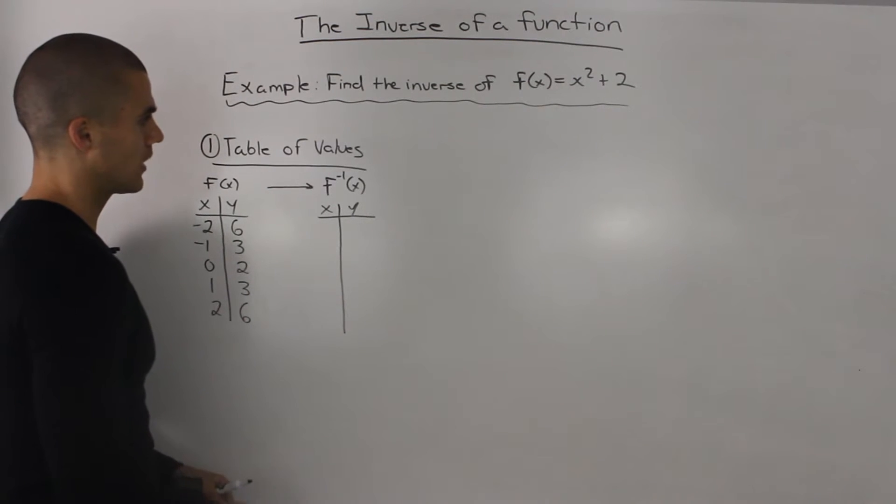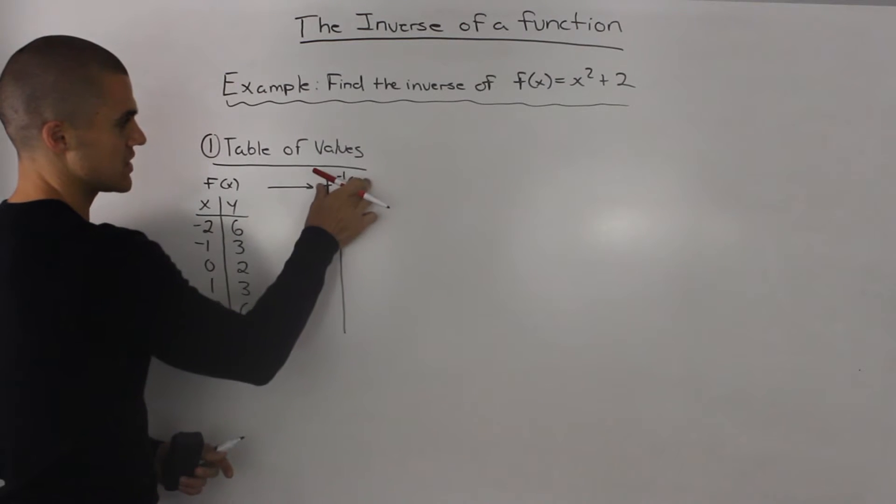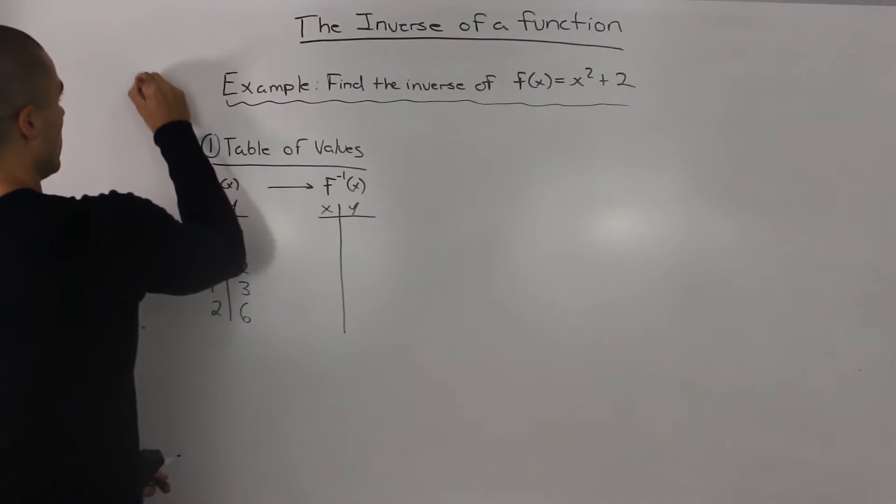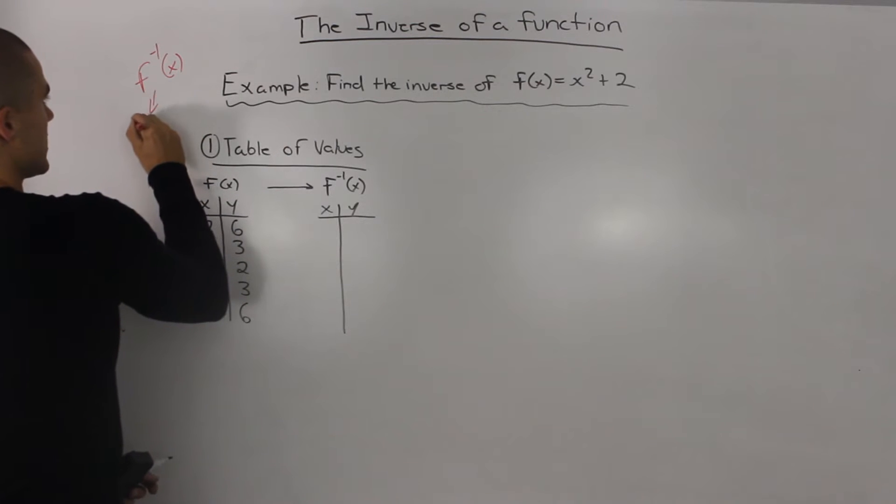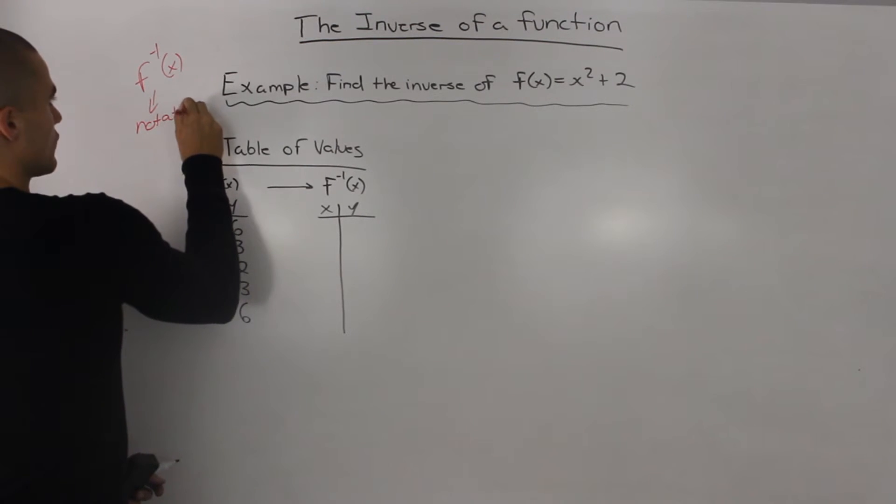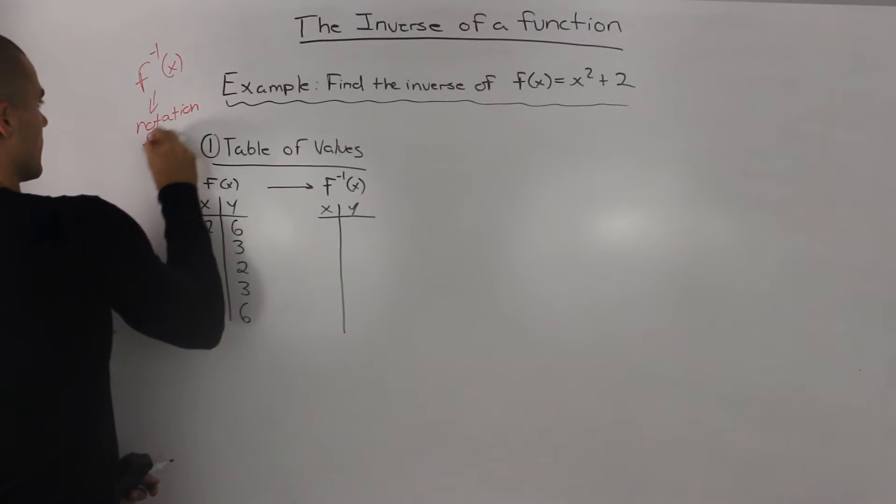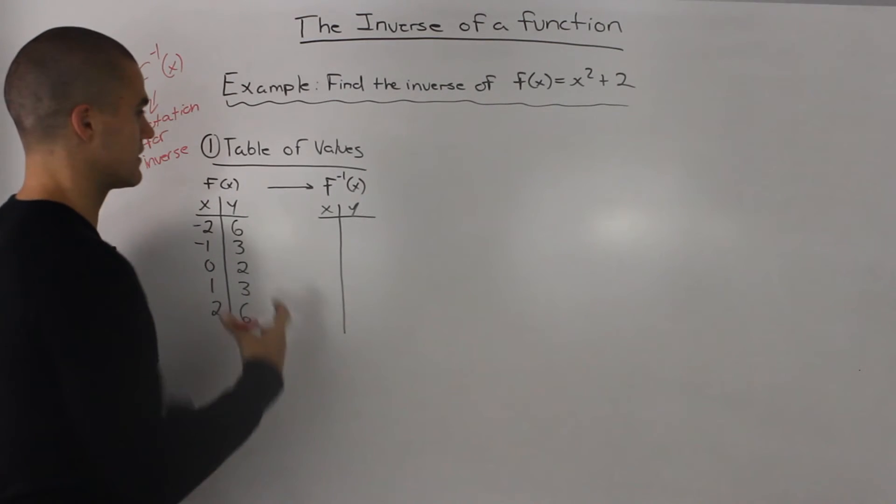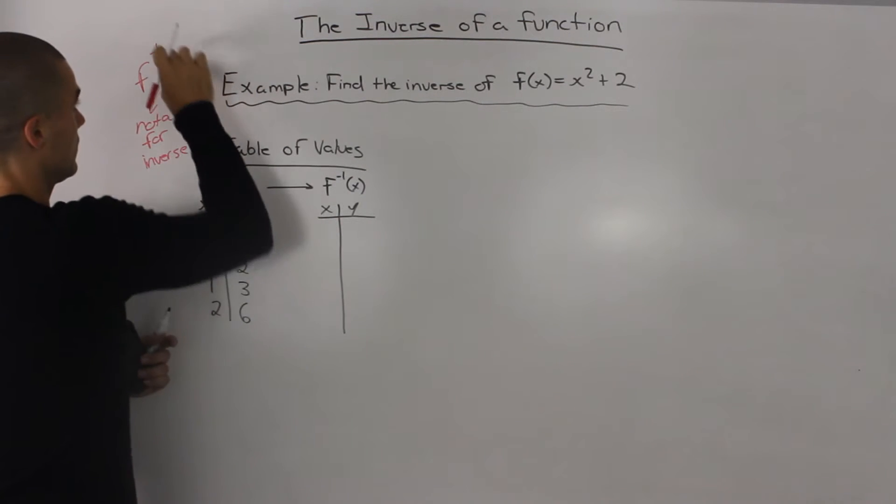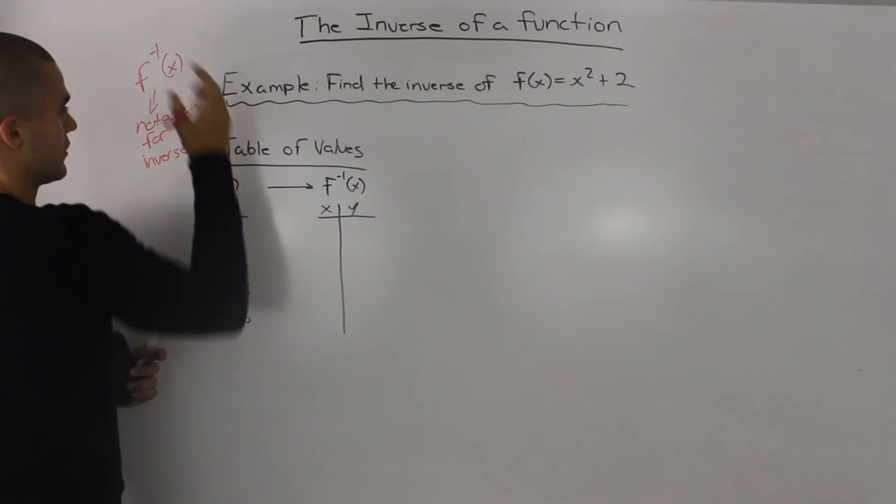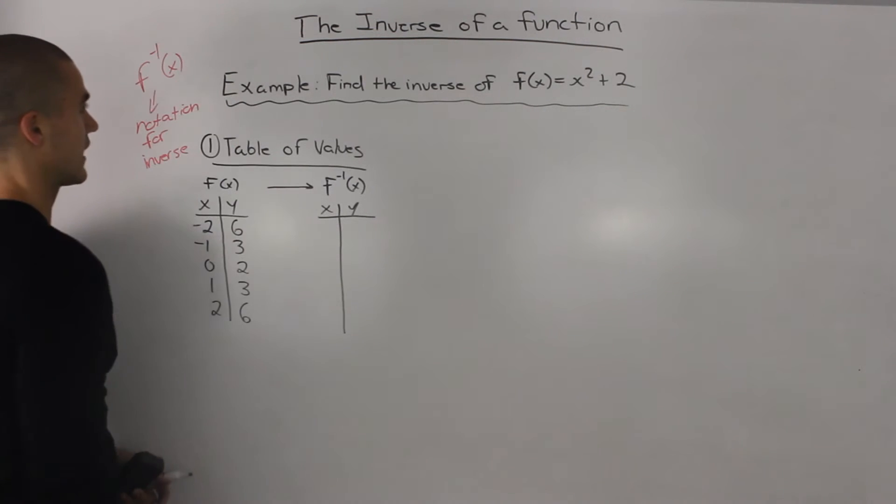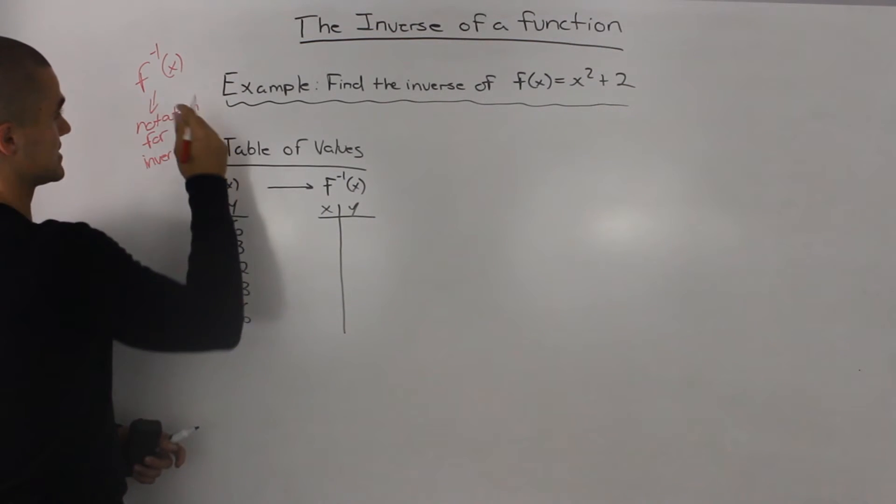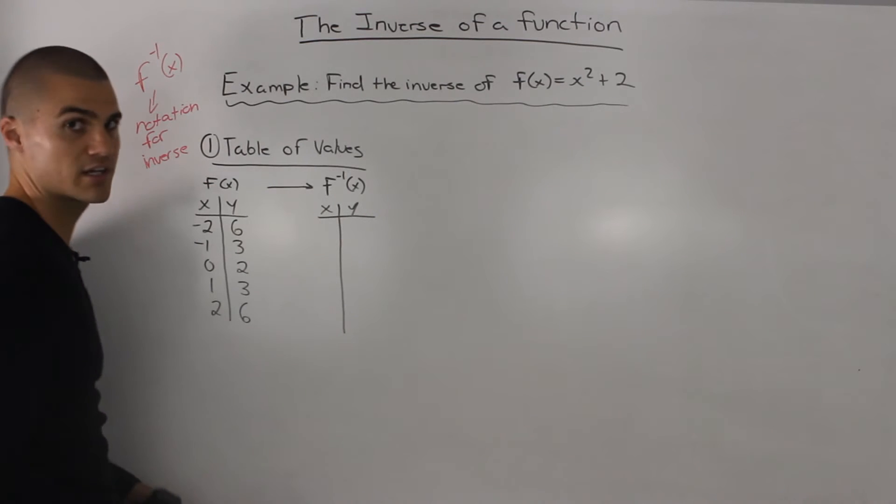Now one note I want to make is this notation here, this f^(-1)(x). This is just notation for the inverse. And this -1 up here does not mean that you take the function to a power of -1, it's just a certain type of notation. You just write the -1 there and it represents the inverse of a function f(x).